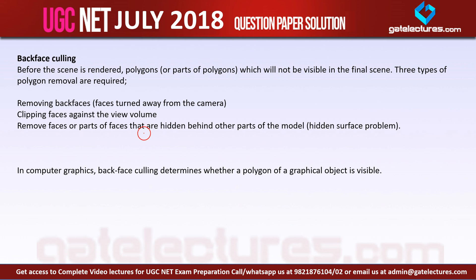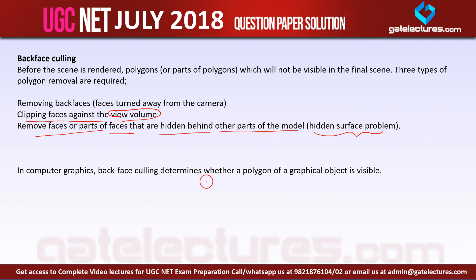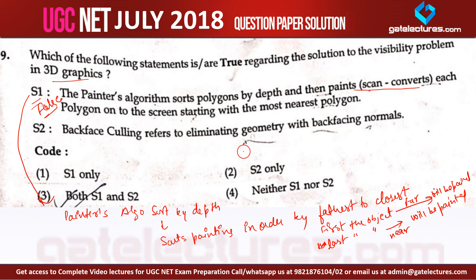The three types of polygon removal are: 1) removing the back faces — faces that turn away from the camera; 2) clipping against the view volume; and 3) removing faces or parts of faces hidden behind other parts of the model, which is called the hidden surface problem. In computer graphics, back-face culling determines whether a polygon of a graphical object is visible. So statement number 2 — back-face culling refers to eliminating geometry with back-facing normals — is actually true.